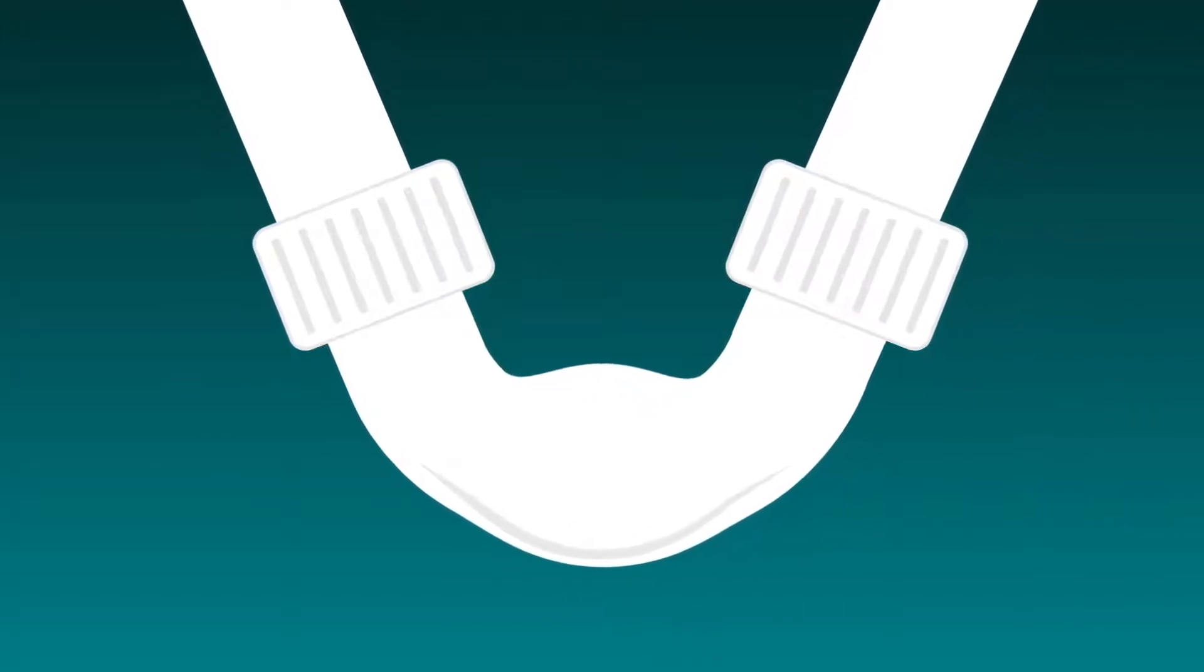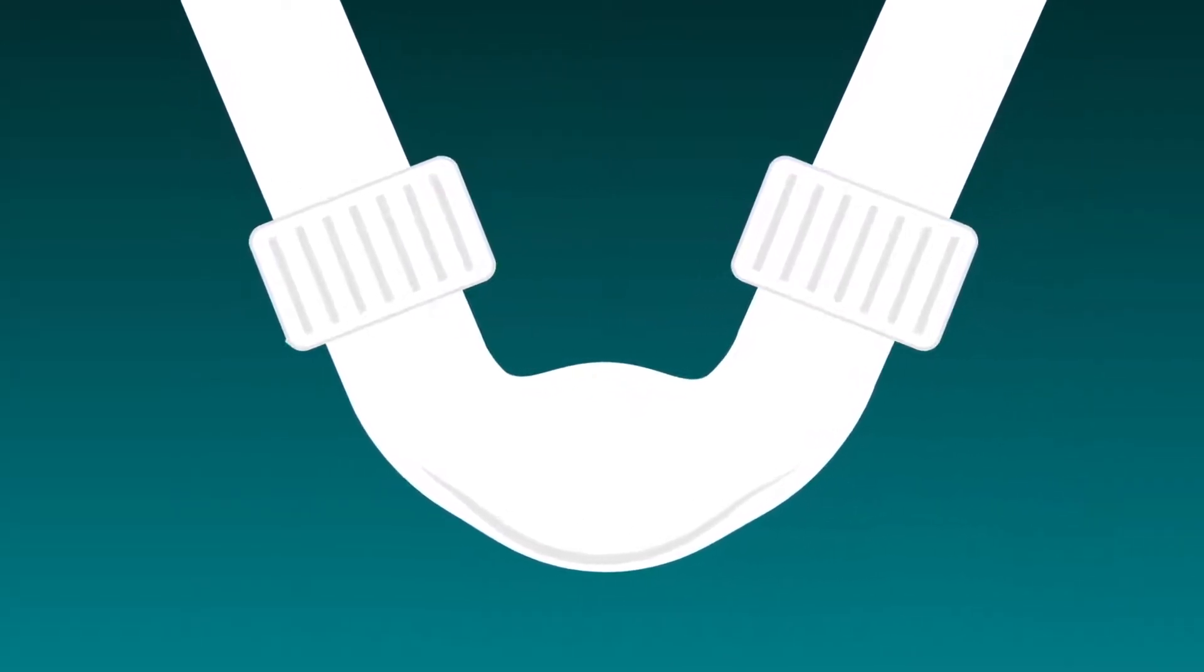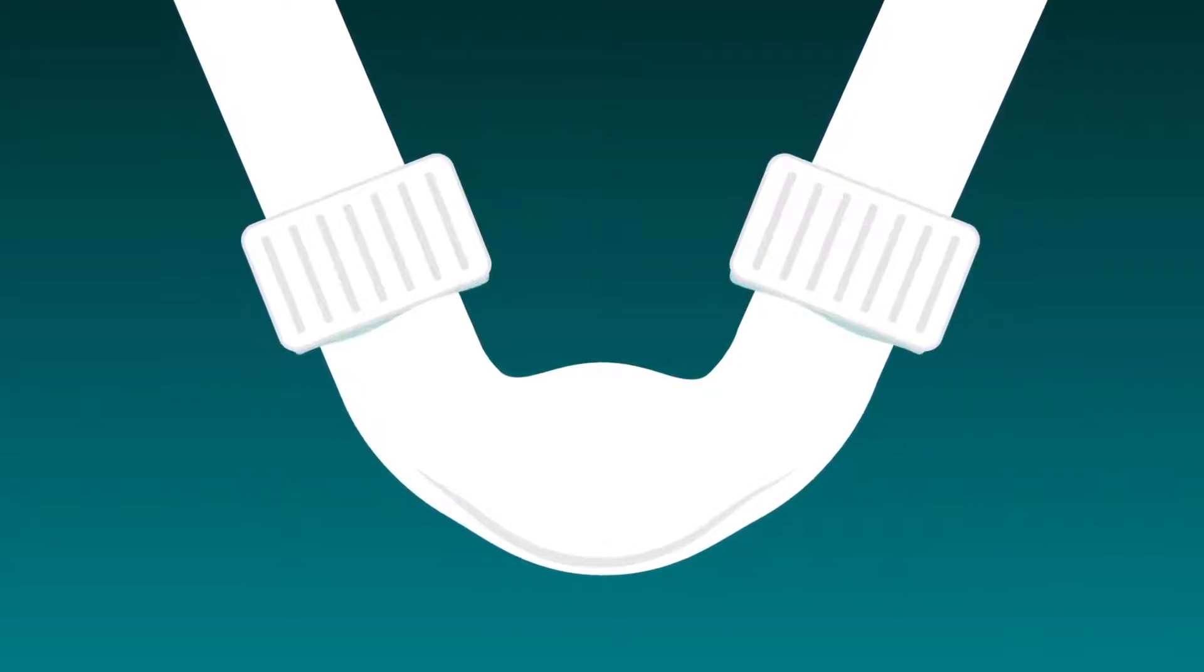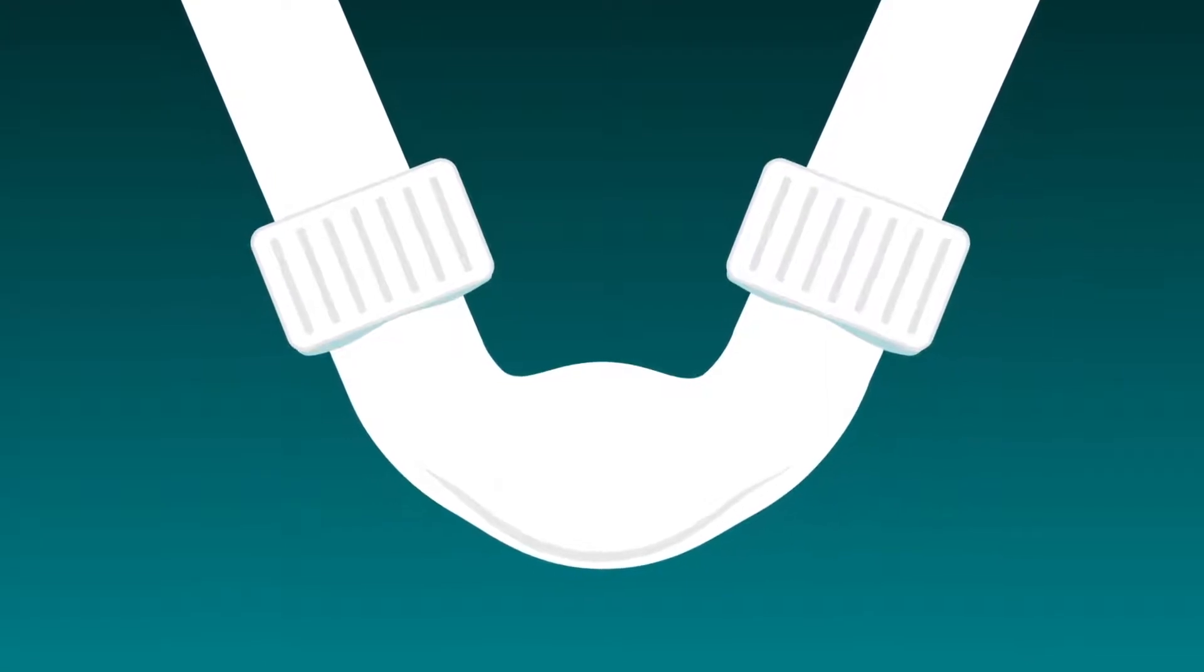For people with severe haemophilia, this can happen after an injury or for no apparent reason, particularly in joints. Bleeding into joints can damage them and over time may result in joint disease.